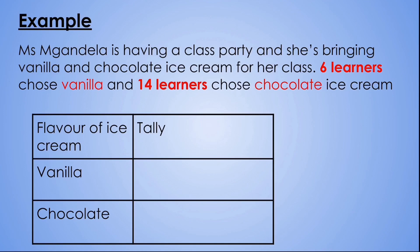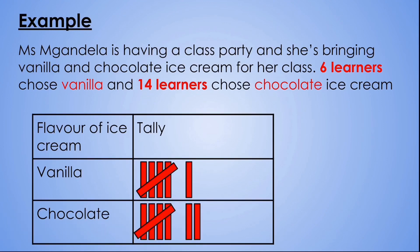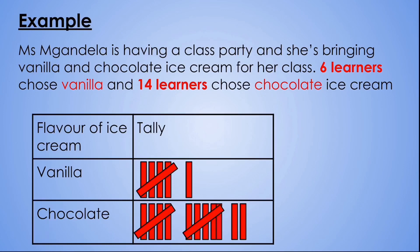6 learners voted for vanilla. Let's count together: 1, 2, 3, 4, 5, 6. And 14 learners voted for chocolate ice cream. Let's count together: 1, 2, 3, 4, 5, 6, 7, 8, 9, 10, 11, 12, 13, 14. 14 learners chose chocolate ice cream. This is what our chart looks like when you've taken the above information and put it into a tally chart.